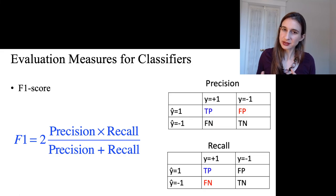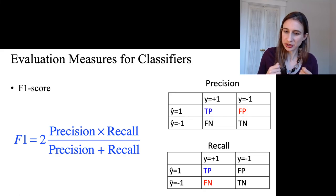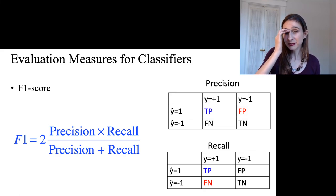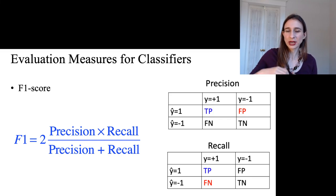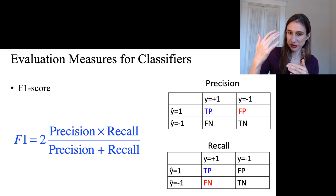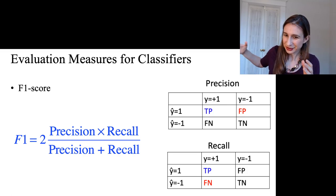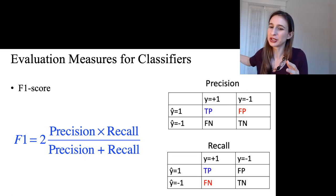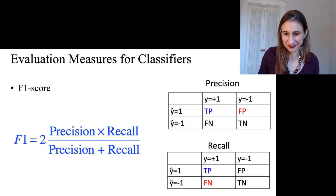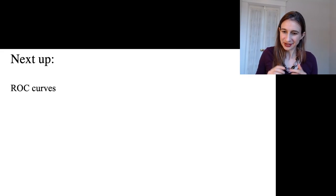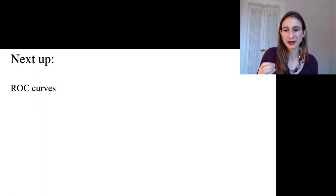Now the F1 score is a harmonic balance between precision and recall. So it measures both whether what I returned was good, that's precision, and it also measures whether I've captured most of what's good in the world, and that's recall. So in the next video, I'll talk about ROC curves, which is a way of measuring or evaluating a classifier that uses the values of the function f.